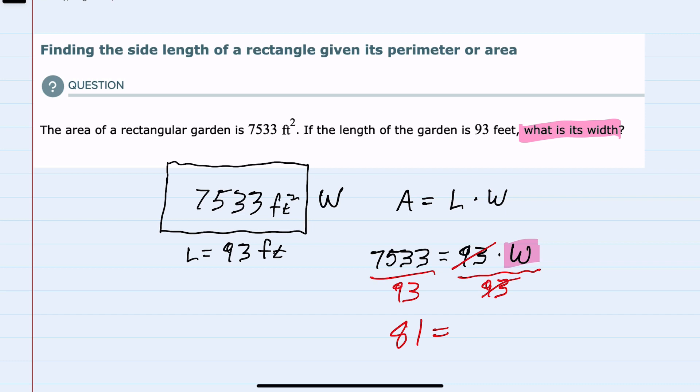The 93s cancel, so the width of our rectangle must be 81 feet to give us that area.